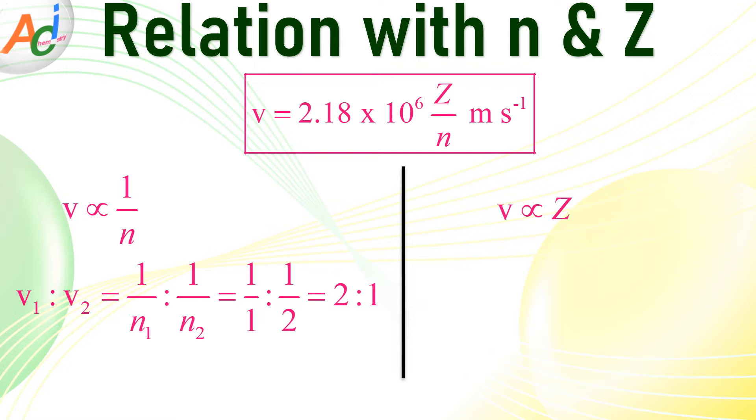However, when comparing the velocities of electrons in hydrogen atom and a helium uni-positive ion with the same n value, the ratio changes to 1:2. This implies that the velocity of an electron in a helium ion is twice that of an electron in hydrogen atom considering the same n value.